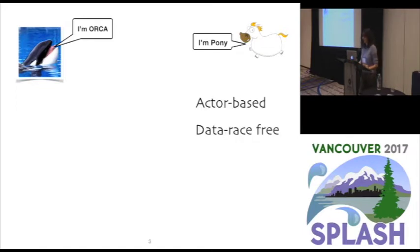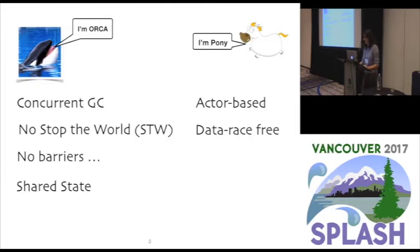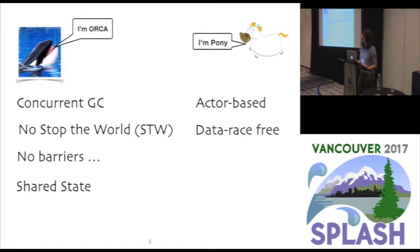Pony is an actor-based language, and among many other things, it uses a type system to ensure that if a program compiles, there are no data races in that program. And Orca is a garbage collector that runs in Pony. It is fully concurrent, meaning that it does not require any stop-the-world steps, and it also does not require any synchronization mechanisms, such as read or write barriers for garbage collection, while allowing actors to share state.